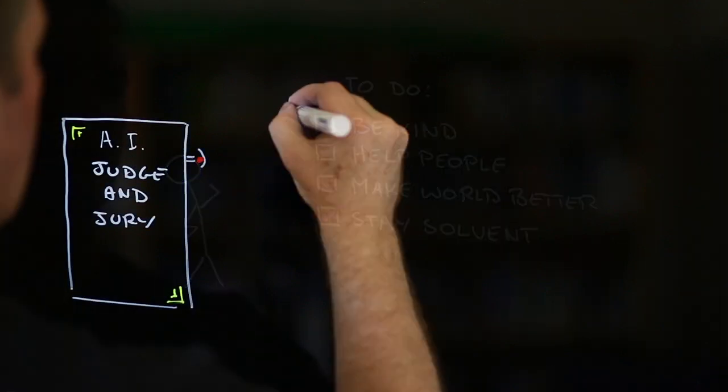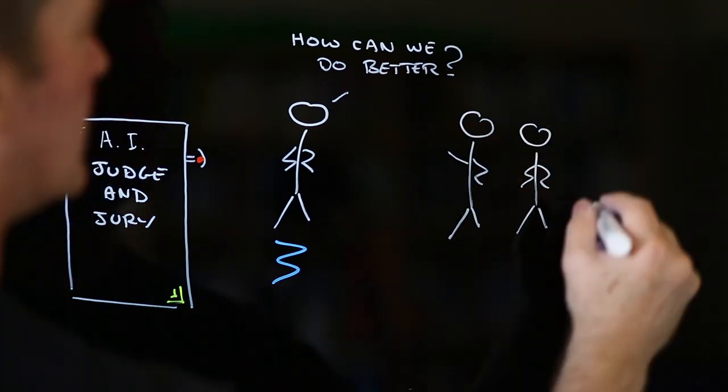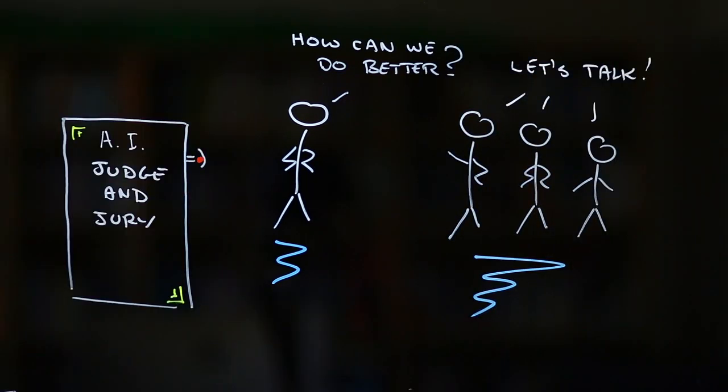Number four, think about how your innovation might exclude or discriminate against some people, and how you can work with them to ensure that this doesn't happen.